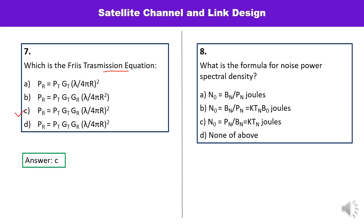Question number 8: what is the formula for noise power spectral density? Noise power spectral density N0 is defined per unit bandwidth. N0 equals N upon B, which gives N0 = K·Tn or equivalently Tn/Bn. So C is the correct option.